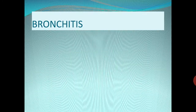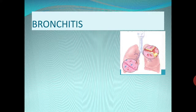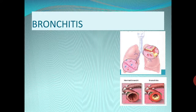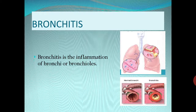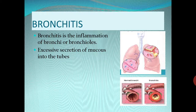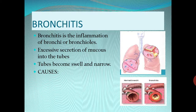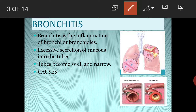The first respiratory disorder is bronchitis. It is the inflammation of the bronchi or bronchioles. In bronchitis, an excessive amount of mucus is secreted into the tubes, and the tubes of the bronchi or bronchioles swell and become narrow due to swelling. In the diagram, you can see a normal tube compared to a swollen, narrowed tube.